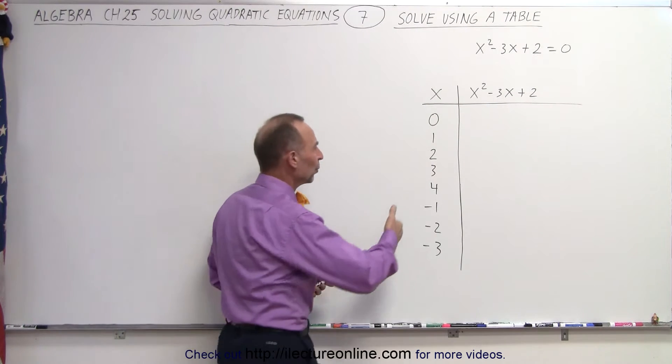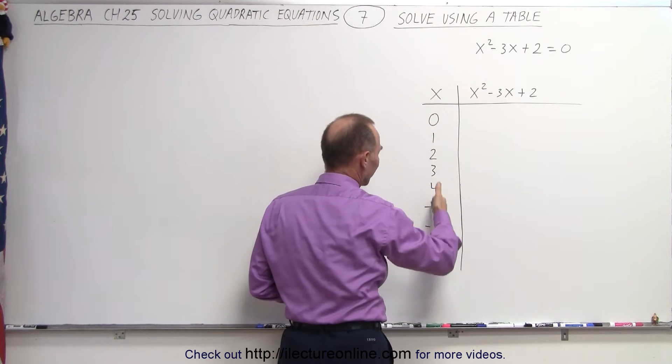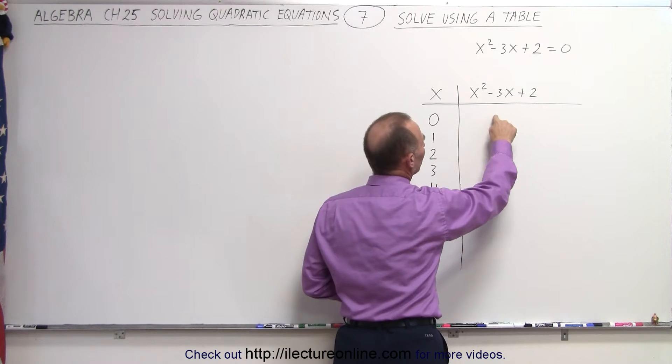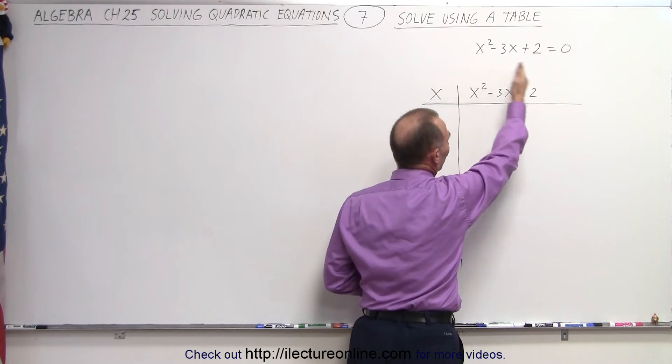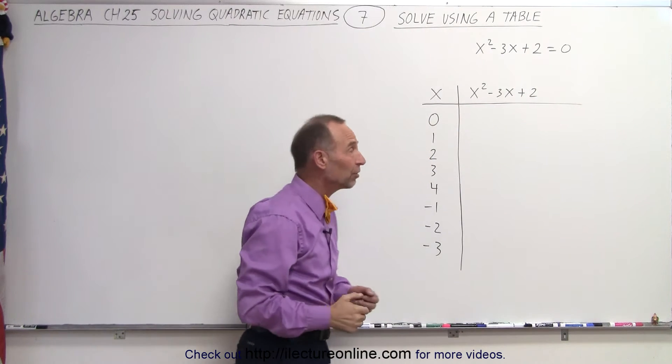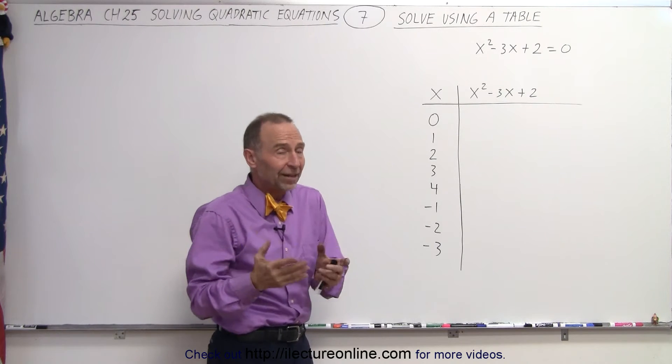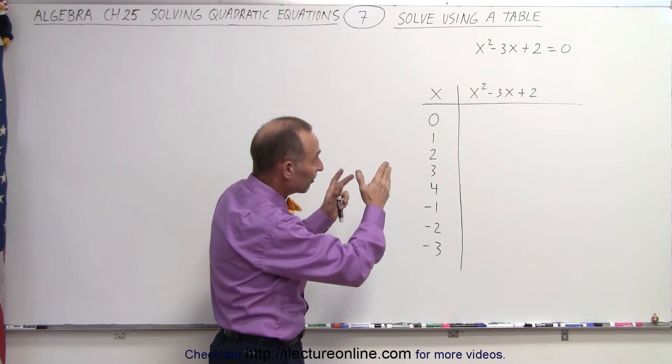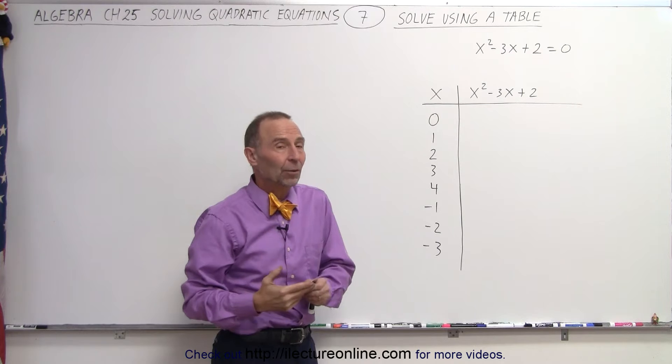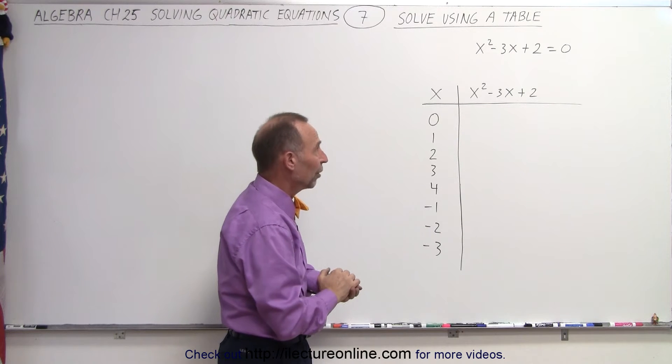We have one column with particular values for x, and another column for what we get when we plug that value into the quadratic equation. We're looking for all values of x that make the left side equal the right side. In this case, we want x² - 3x + 2 to equal 0.